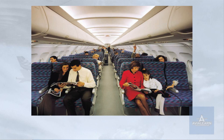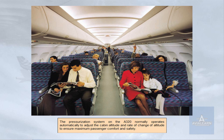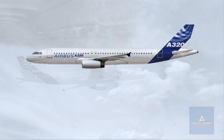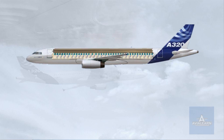The pressurization system on the A320 normally operates automatically to adjust the cabin altitude and rate of change of altitude, to ensure maximum passenger comfort and safety. The pressurized areas are the cockpit, the avionics bay, the cabin, and the cargo compartments.